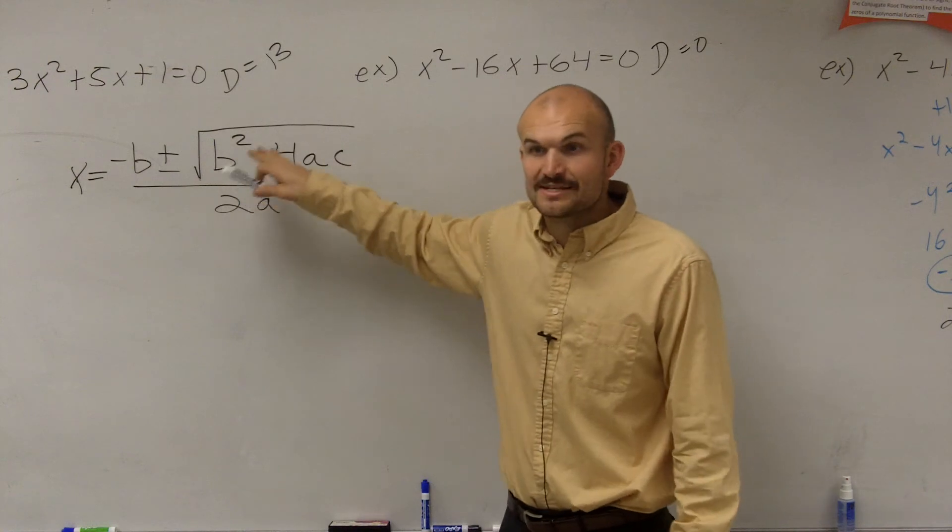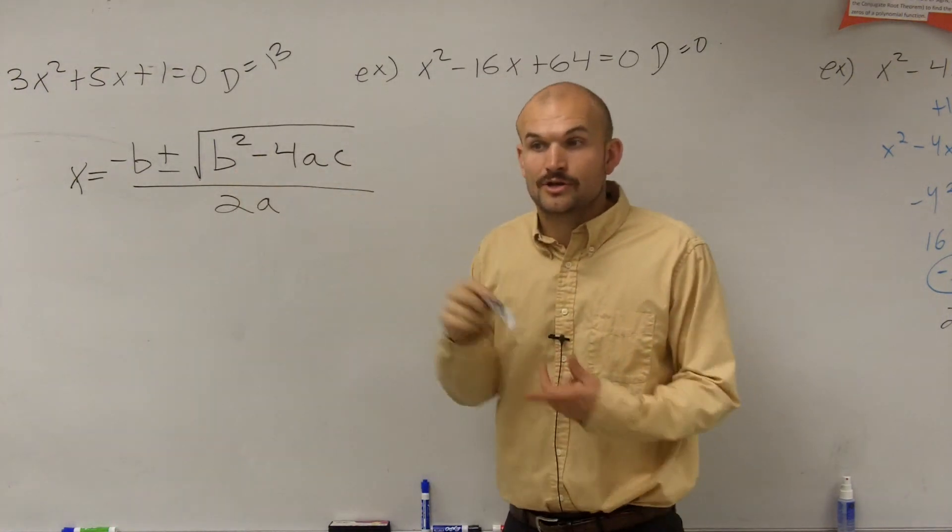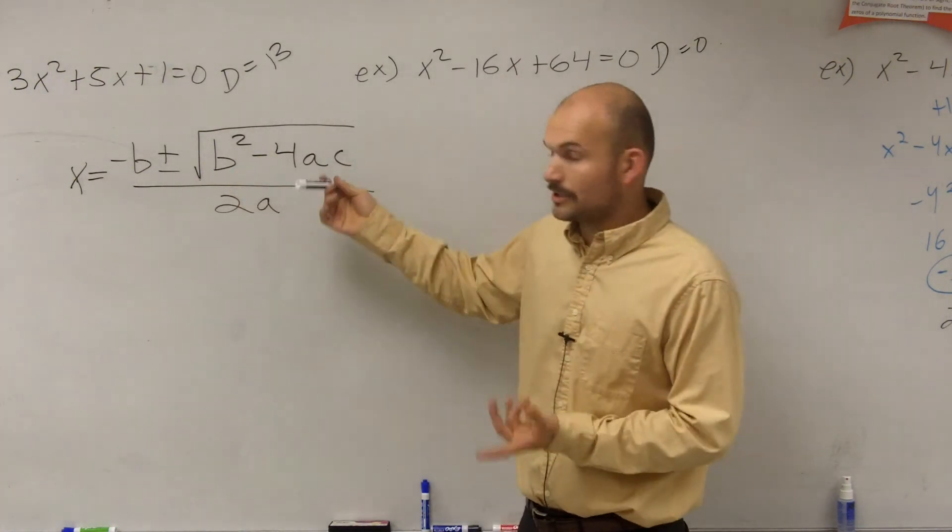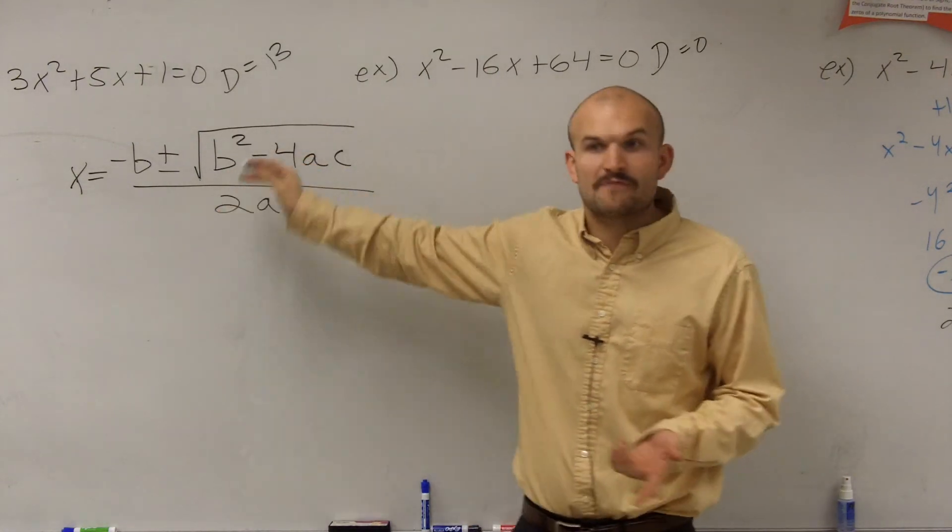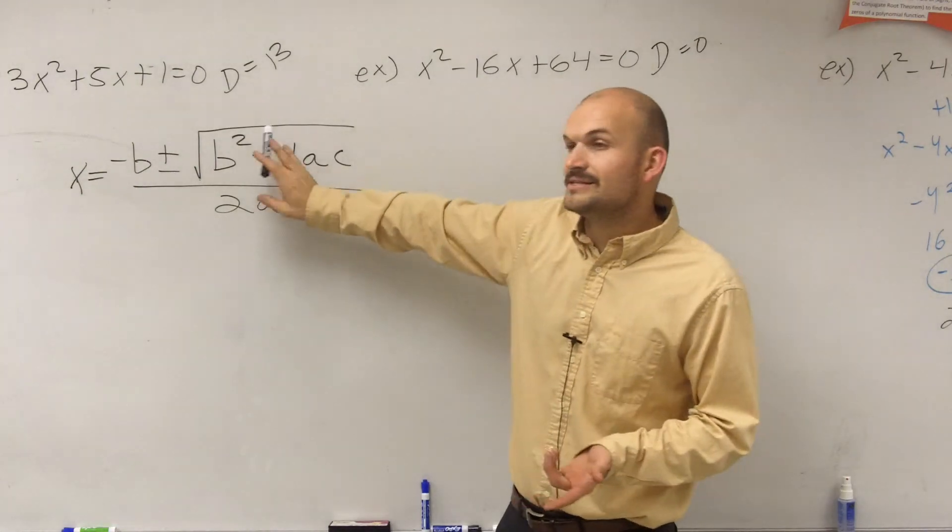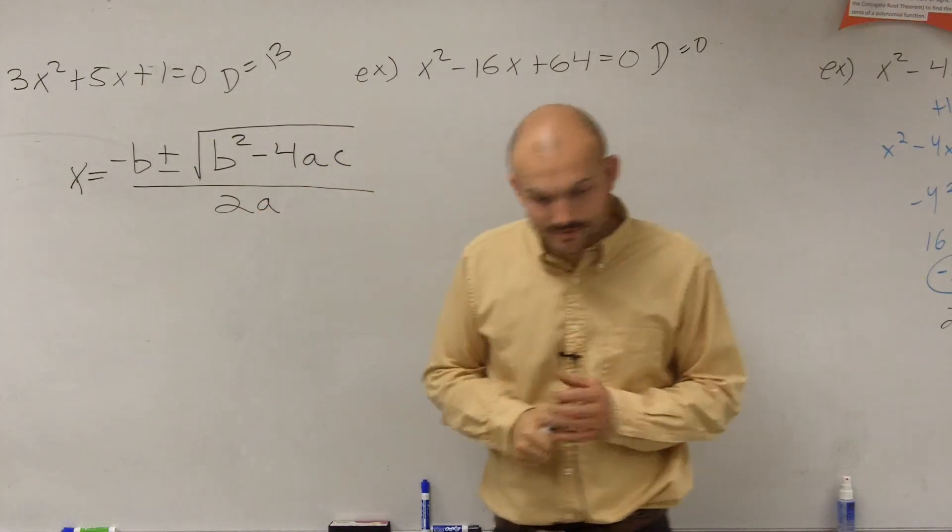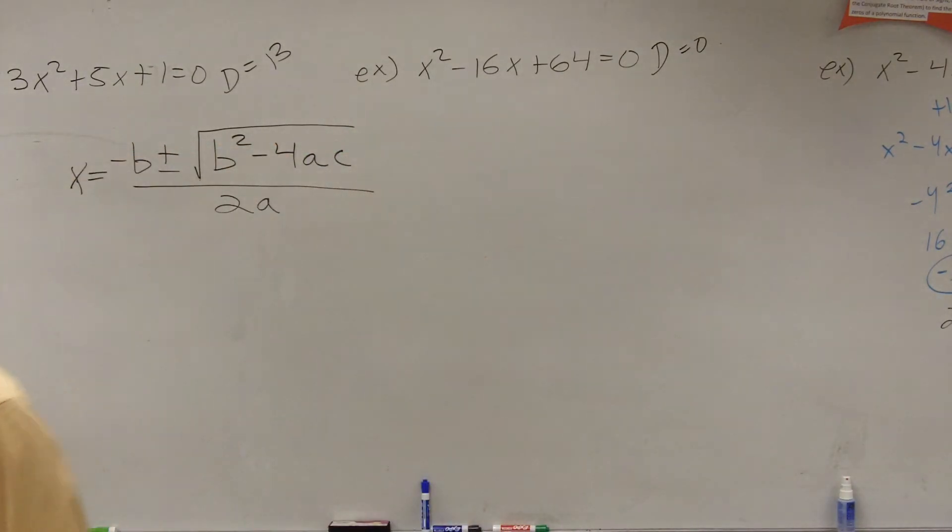If your discriminant's negative, since you're taking the square root of a negative number, you're going to have imaginary numbers and complex roots. And if it's a square number, you can take the square root, so you'll have rational roots. And if it's not a square number, you're going to have irrational roots.